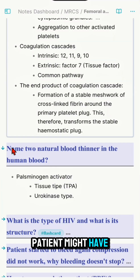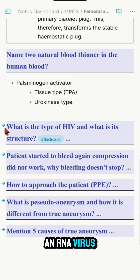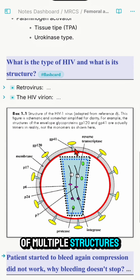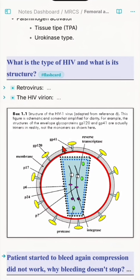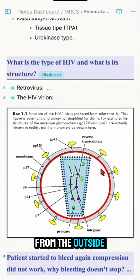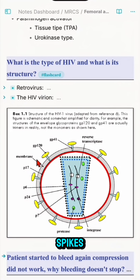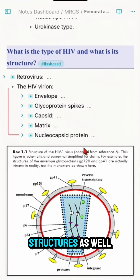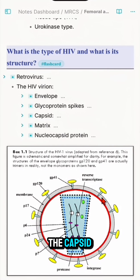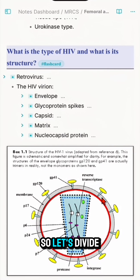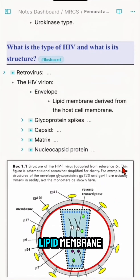HIV is an RNA virus formed of multiple structures. As shown in the diagram, on the outside there is the envelope, protein spikes, and inside the envelope there are important structures: the capsid, the matrix, and the nucleocapsid.